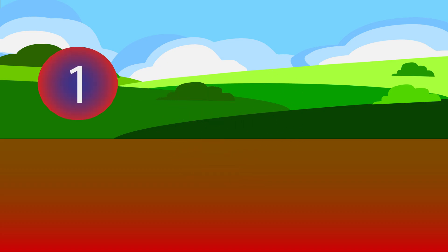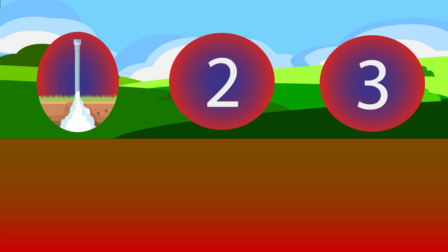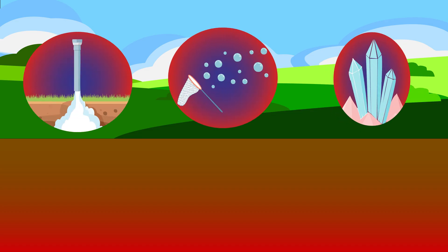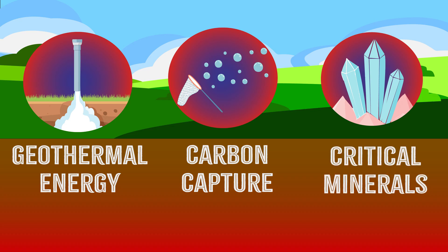Here, we'll talk about three ways Earth science is helping with the transition to cleaner energy and how, by learning about geothermal heat, carbon capture, and buried critical minerals, and what tools are helping scientists find them deep underground.